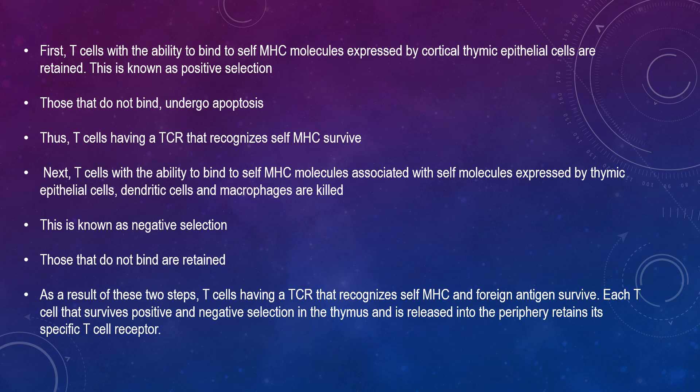Next, T cells with the ability to bind to self-MHC molecules associated with self-antigens, expressed by thymic epithelial cells and dendritic cells and macrophages, are killed. This is known as negative selection. Those that do not bind are retained. As a result of these two steps, T cells having a TCR that recognises self-MHC but not self-antigens — i.e., recognises foreign antigens — are produced.